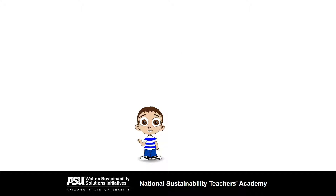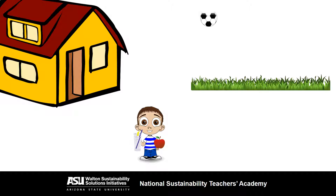Everyone needs certain things to have a good life. We all need and want food, water, shelter, and fun. Our ecological footprint is the amount of the earth we use to get these things.